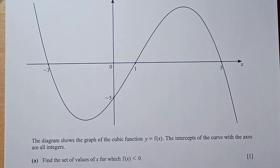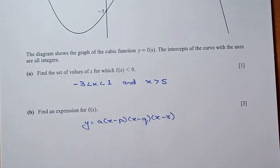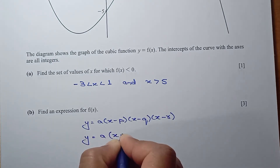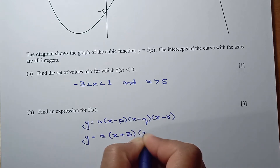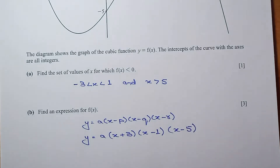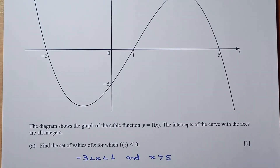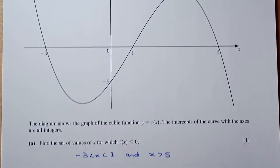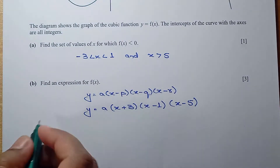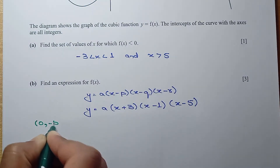Substituting values minus 3, 1, and 5: y equals a times (x plus 3)(x minus 1)(x minus 5). Now we need to find the value of a using the y-intercept. As you can see on the curve, the y-intercept is minus 5 and the x value is 0. So we substitute x equals 0 and y equals minus 5 to find a.